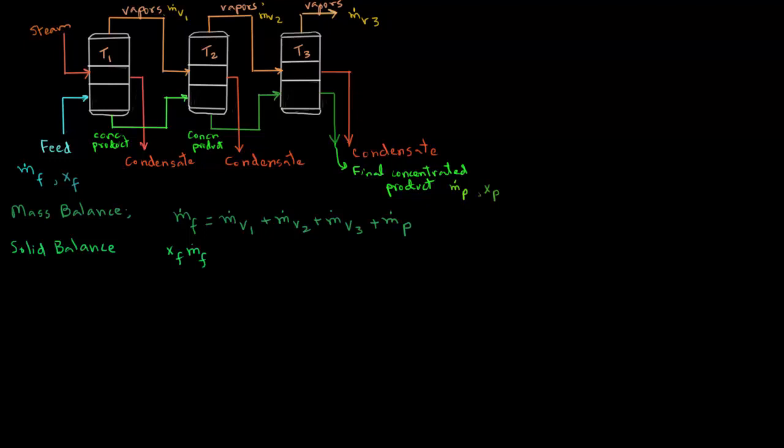The solid balance can be written as xf times m.f, where xf is the solid fraction, which will be dimensionless. So xf·m.f tells us the amount of solid present in the feed stream. That equals xp, the solid fraction in the concentrated product stream, times m.p.